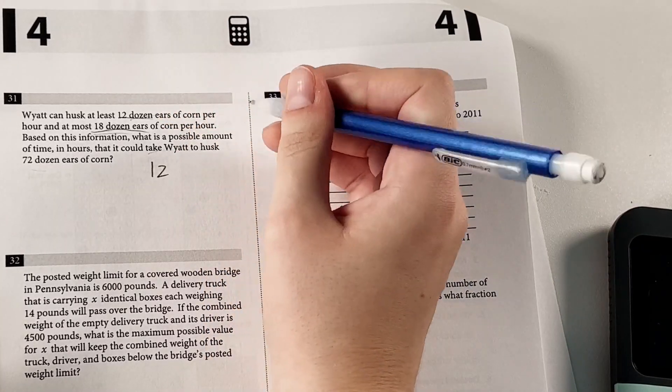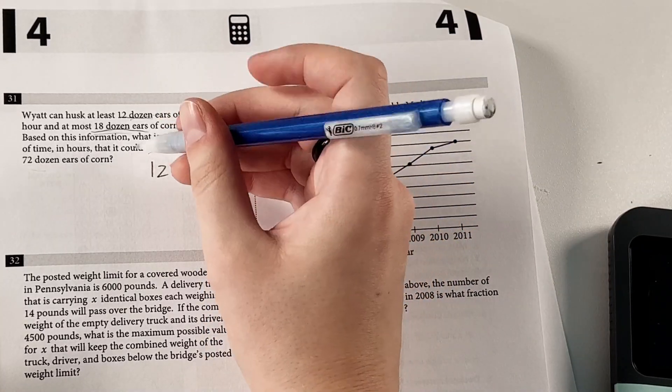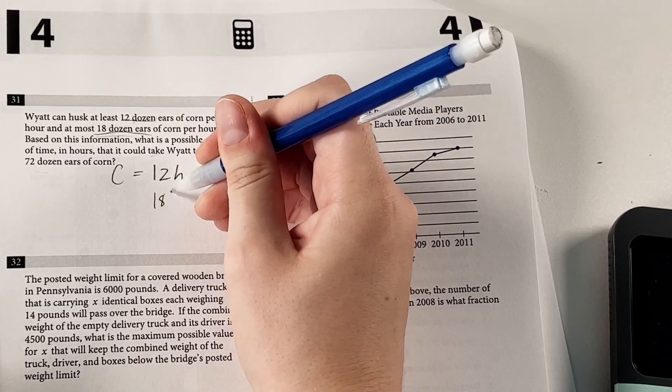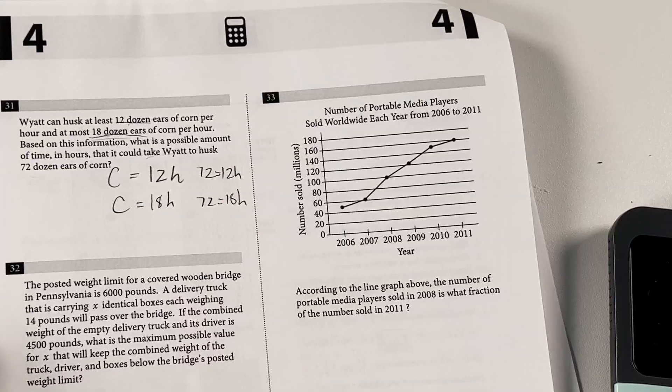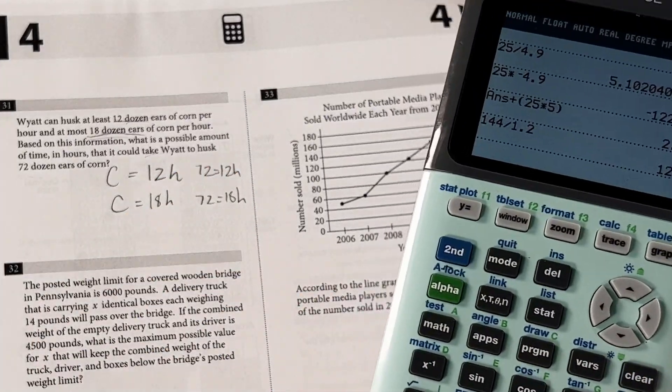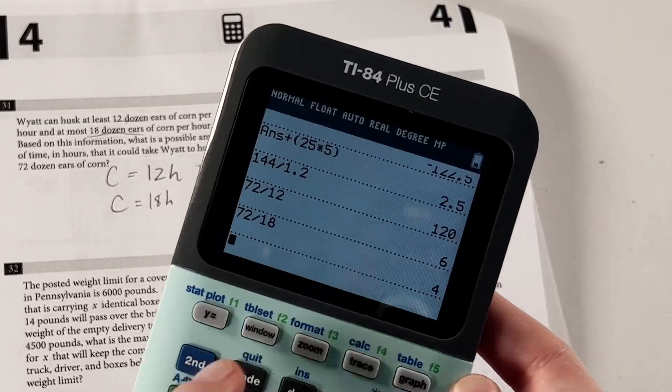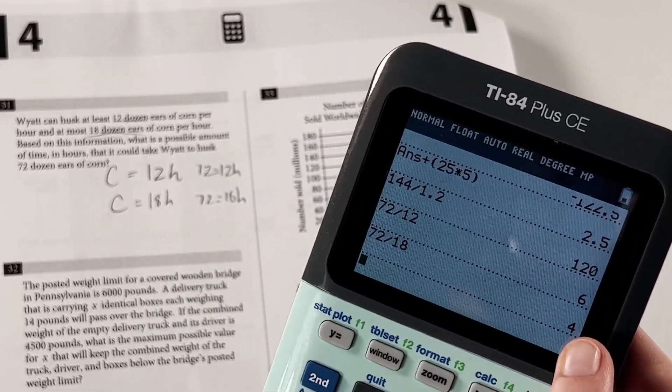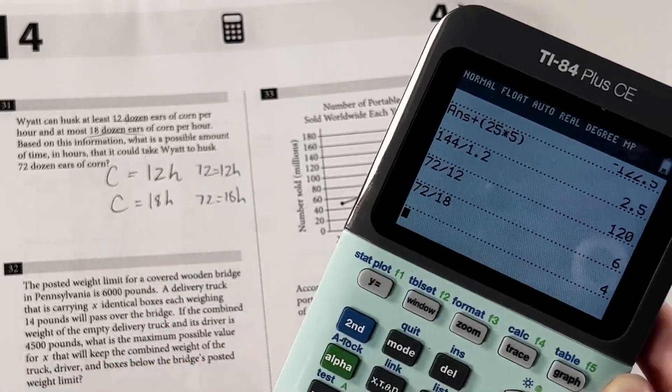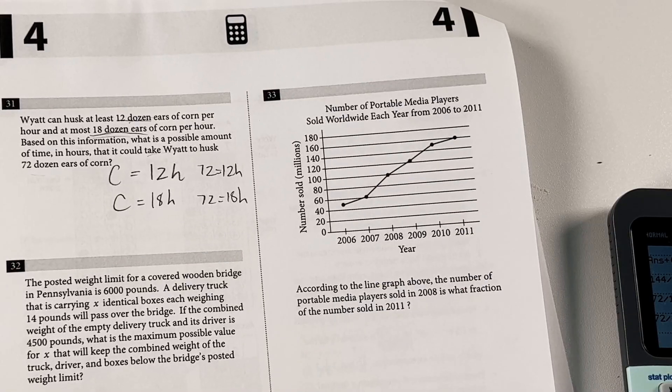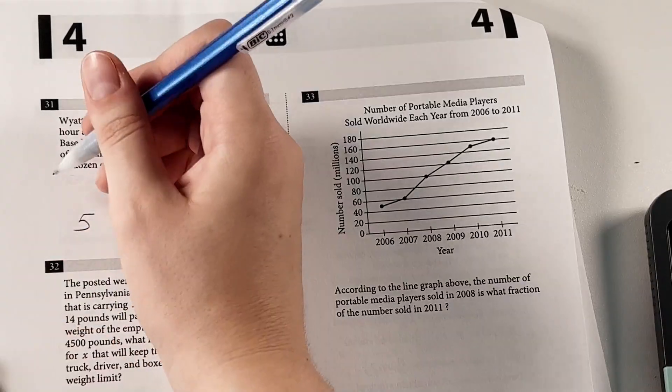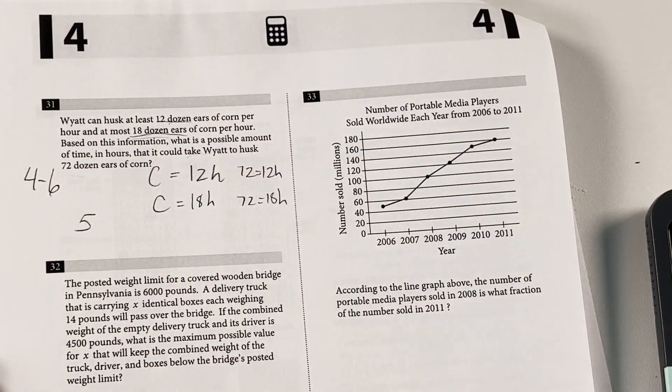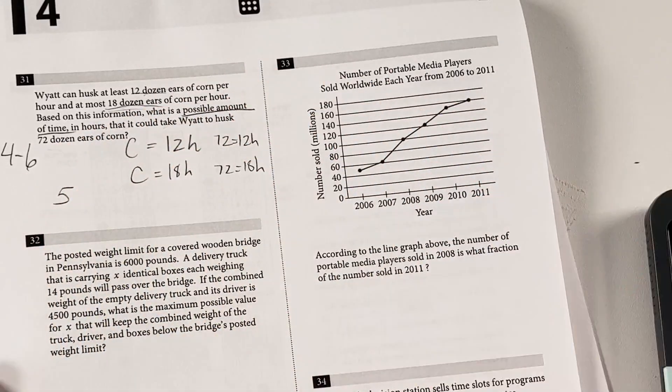His minimum rate is 12 times the hours is the number of ears of corn, and his max rate is 18h. If we want to get to the value 72, in the minimum case, we would do 72 divided by 12. In the max, we'd do 72 divided by 18. So we get that best-case scenario, he's done in four hours. Worst-case scenario, he's done in six hours. We can pick any time in between here, including those two values. Erring on the side of caution, I'm just going to say five for this one, but it's really anywhere between four and six, since it's a possible amount of time that it would take him.